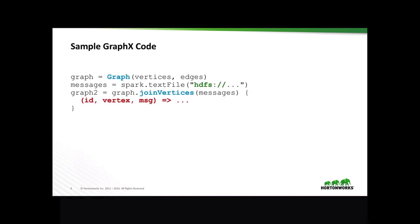Finally, let's go over a sample GraphX code. Say you've wanted to create a graph for vertices and edges, and then you've written messages from some text file on HDFS. Then you wanted to create another graph, graph2, by joining the message vertices on the original graph to do some mapping of ID, vertex, and message. Now this example is quite simple, but it gets rather involved very quickly, so I've decided to skip it in this crash course and encourage you to check out the Spark documentation for more details.